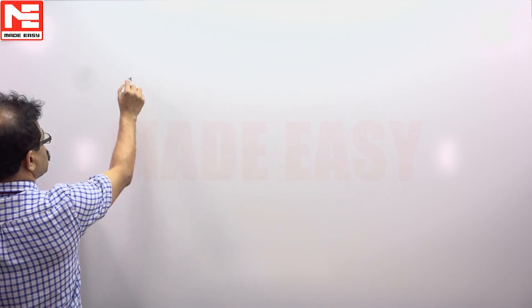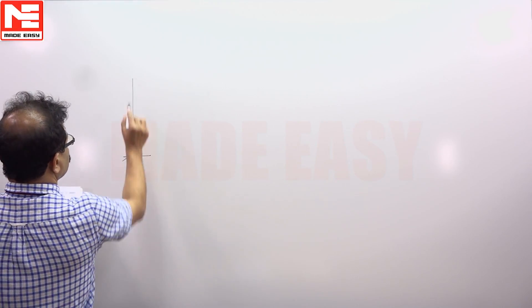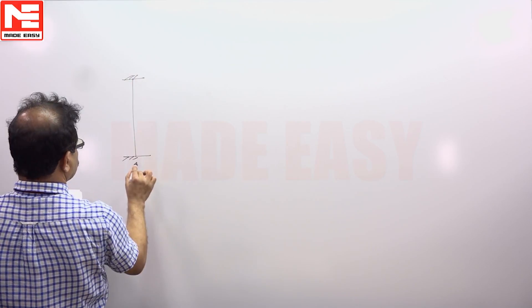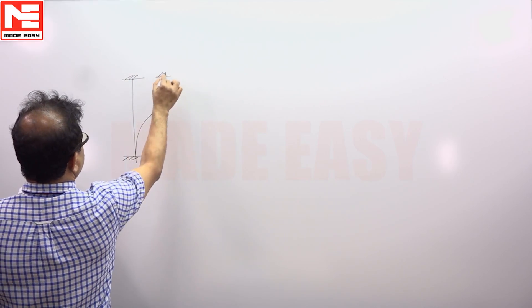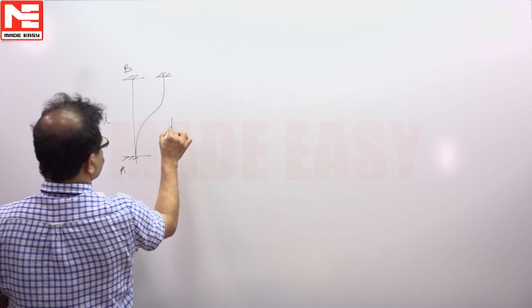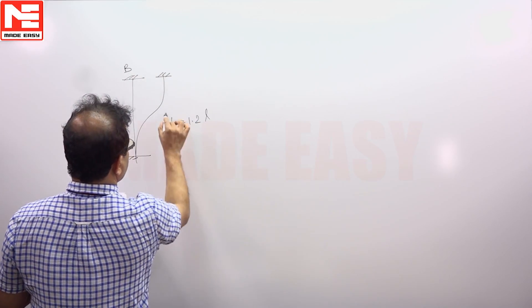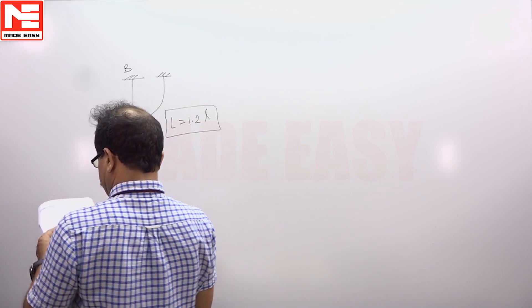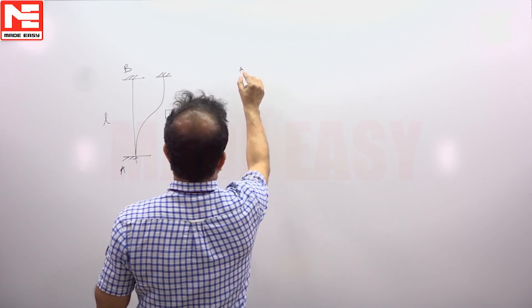If you have a rolled steel section used as a column, for this end condition the effective length is 1.2L. Now the slenderness ratio comes.